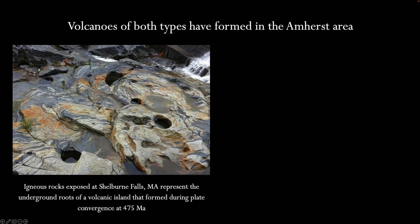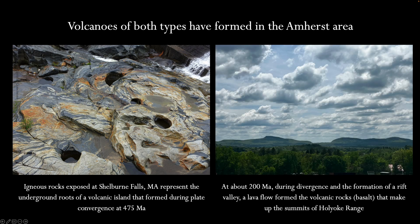Igneous rocks exposed at Shelburne Falls crystallized from magma deep beneath a volcanic island that formed during plate convergence 475 million years ago. Later on, 200 million years ago, during the breakup of Pangaea, a lava flow formed the volcanic rocks that make up the summits of the Holyoke Range.